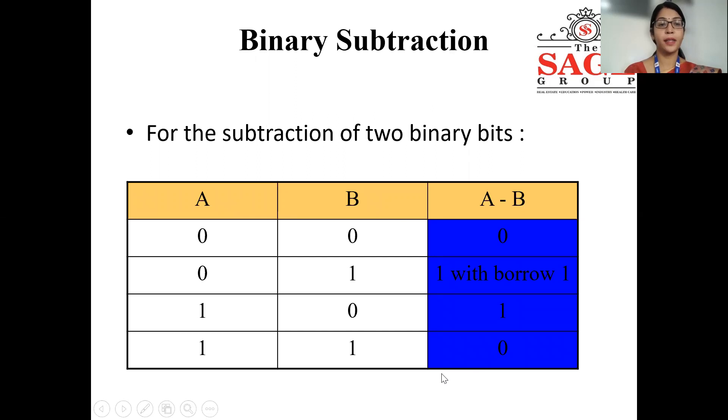Second operation is subtraction operation. For the subtraction of two binary bits, let us again suppose A and B as two binary bits which need to be subtracted. 0 minus 0, the difference will be 0. 0 minus 1, that means if you want to subtract 1 from 0, then you have to take a borrow from the previous stage, and in the difference you will get 1 with a borrow 1. 1 minus 0 is 1. 1 minus 1 is 0.